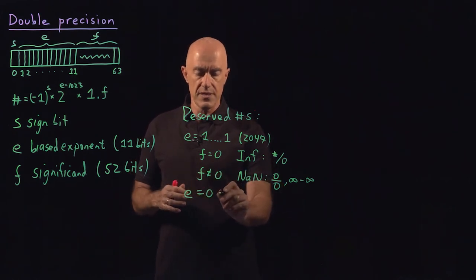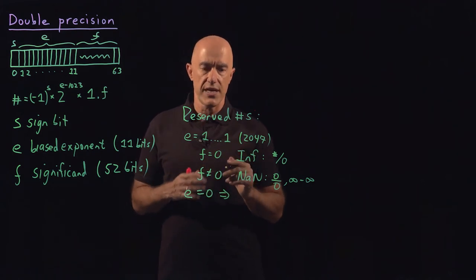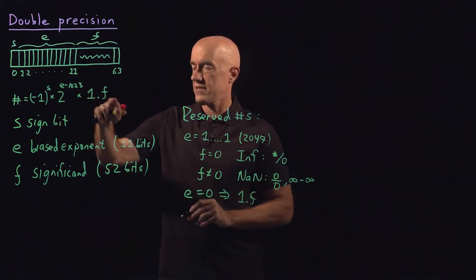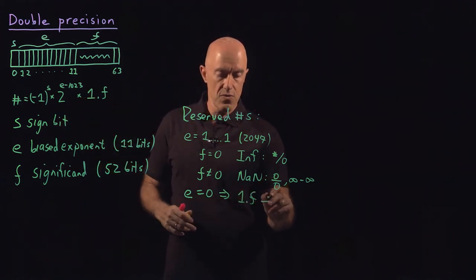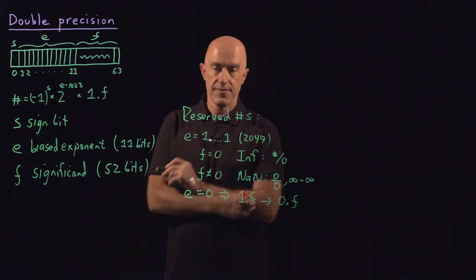then what happens is the representation of the number itself changes. It goes from one point F here in the significand to a representation which is zero point F.